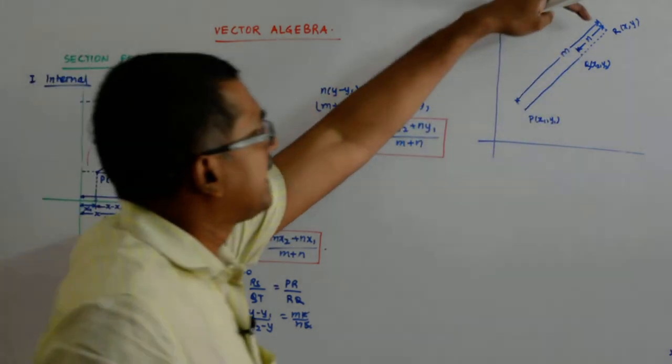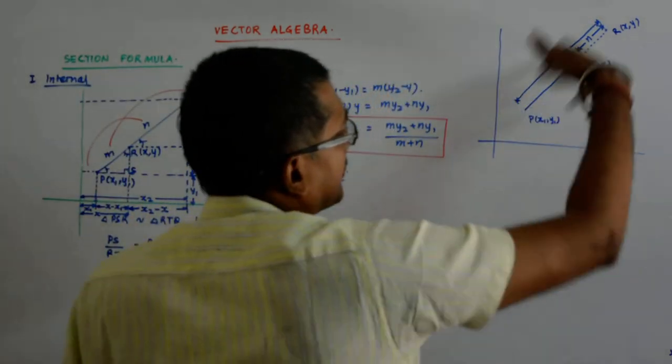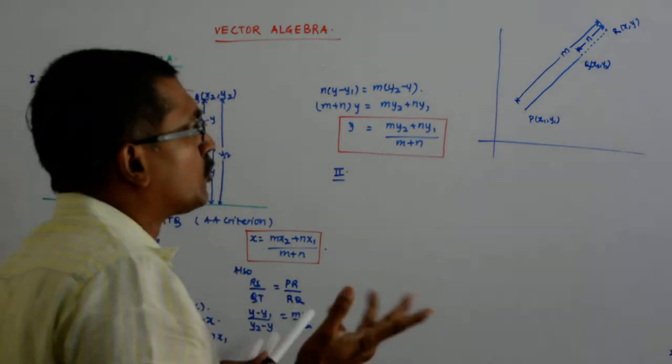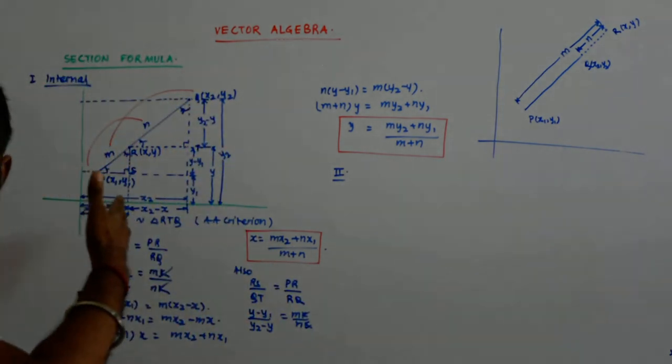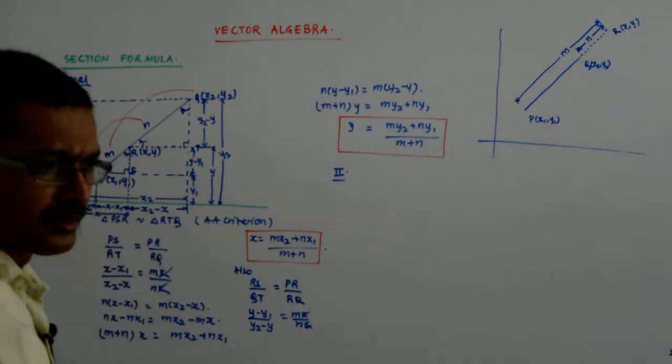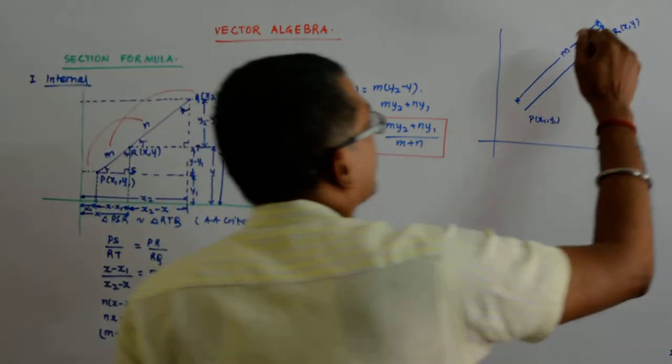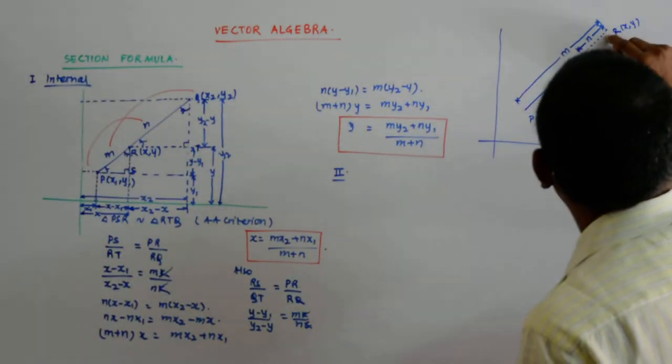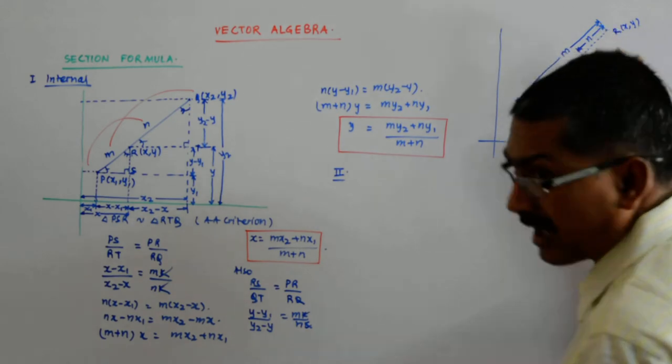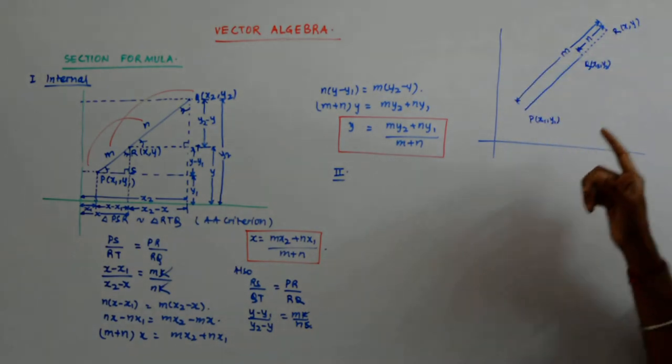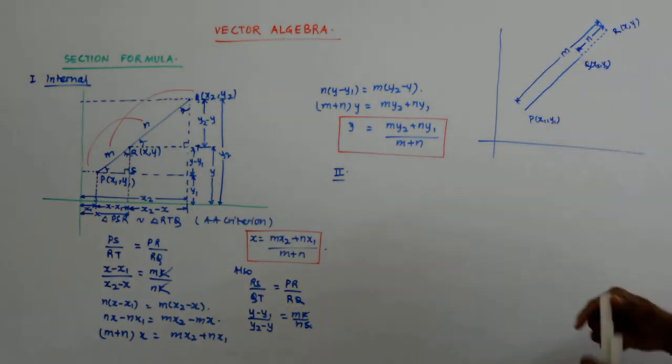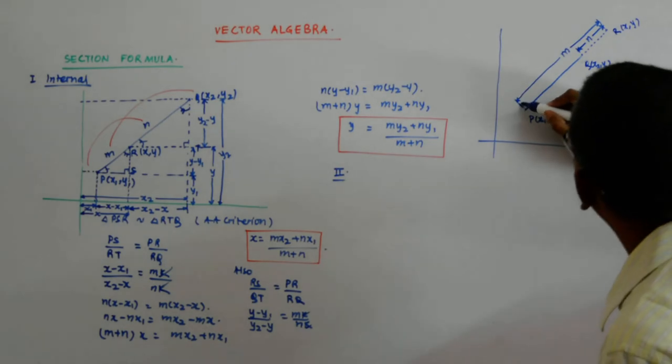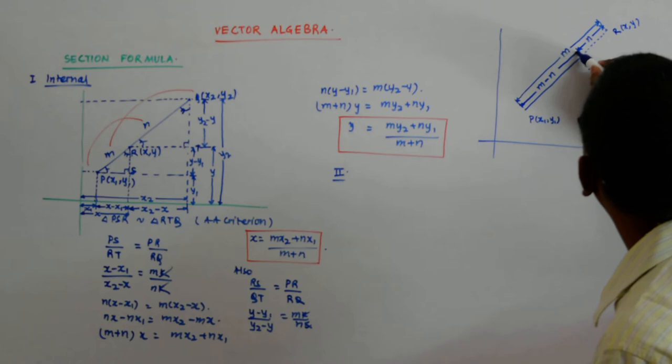So, when it is externally located, that means this is out of this, you can do two things. You can apply the same formula here or what we can do? We can assume that r, it is p and r are the given points and q is dividing it internally in the ratio m minus n is to n.